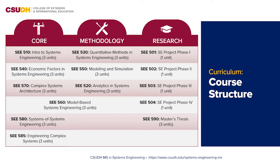In the first semester's 501 course, you're essentially identifying a general topic for your thesis. In the 502 course, you're specifically nailing down the research questions you plan to investigate. In the 503 course, you determine the methodology or approach you'll use to solve your research questions. The 504 course is when you develop a formal research proposal. Lastly, the final semester is when you enroll in a three-unit master's thesis. Because this is a practitioner's program, all content needed in core and methodology courses is introduced to prepare you for successfully completing your thesis or culminating project.